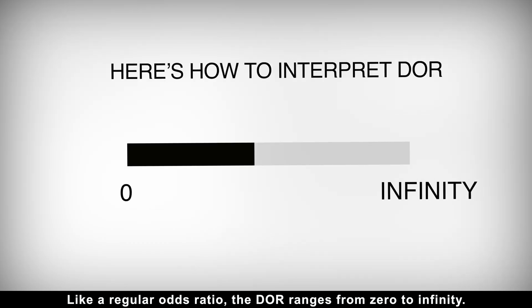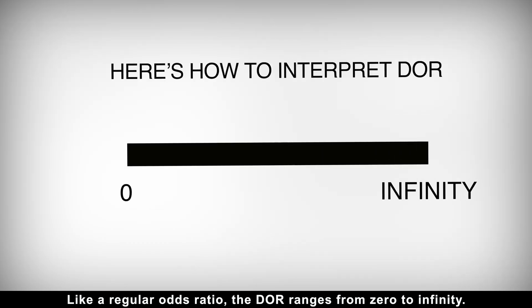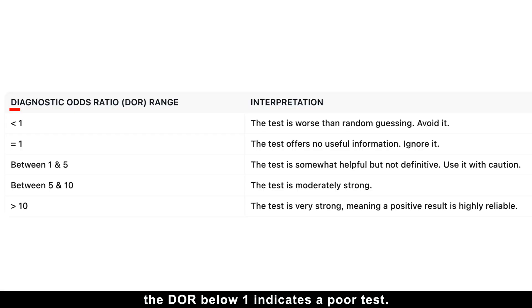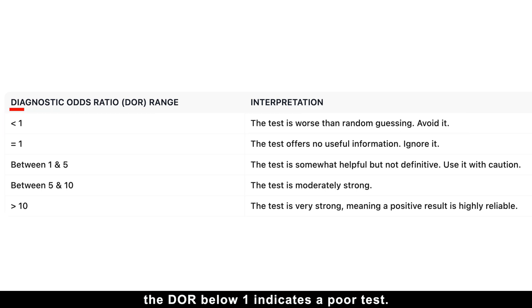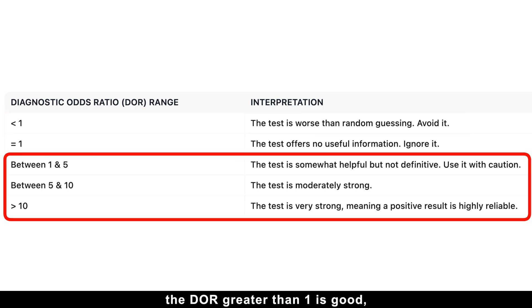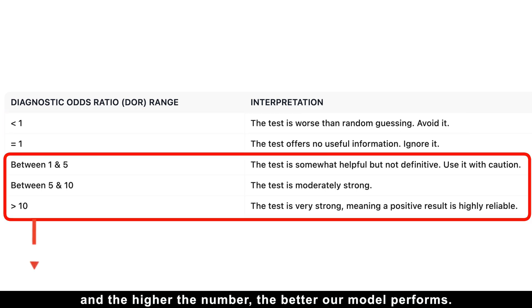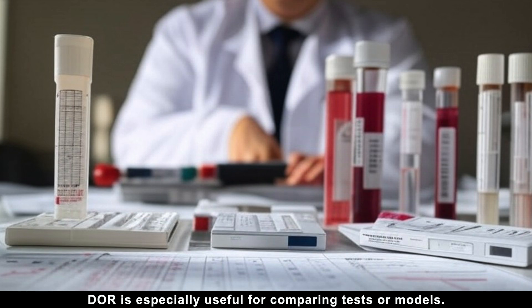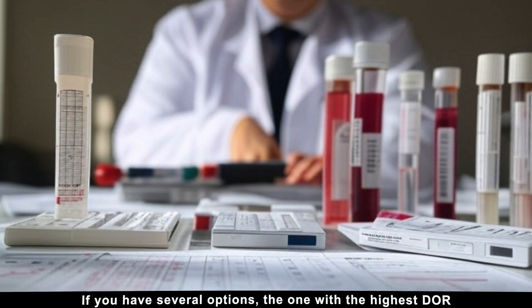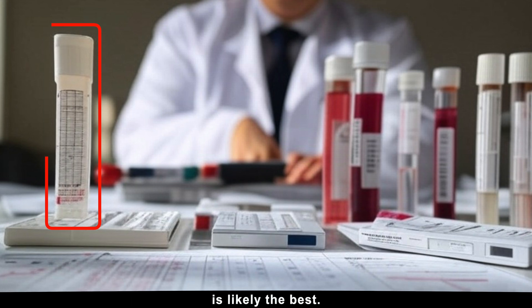Like a regular odds ratio, the diagnostic odds ratio ranges from 0 to infinity. A diagnostic odds ratio below 1 indicates a poor test, while greater than 1 is good — and the higher the number, the better the model performs. The diagnostic odds ratio is especially useful for comparing tests or models: the one with the highest diagnostic odds ratio is likely the best.